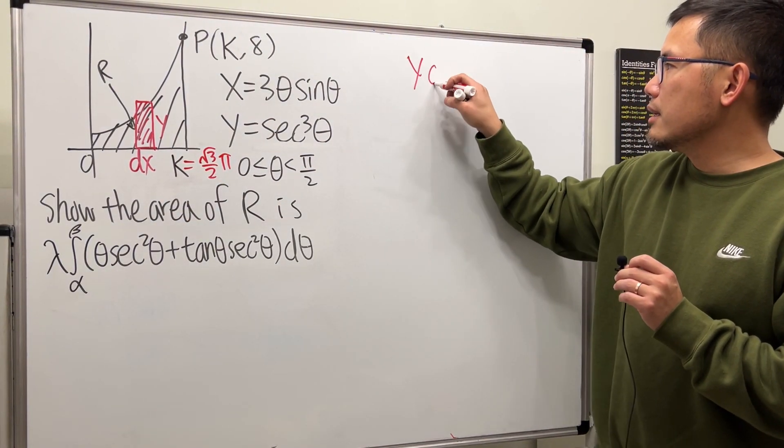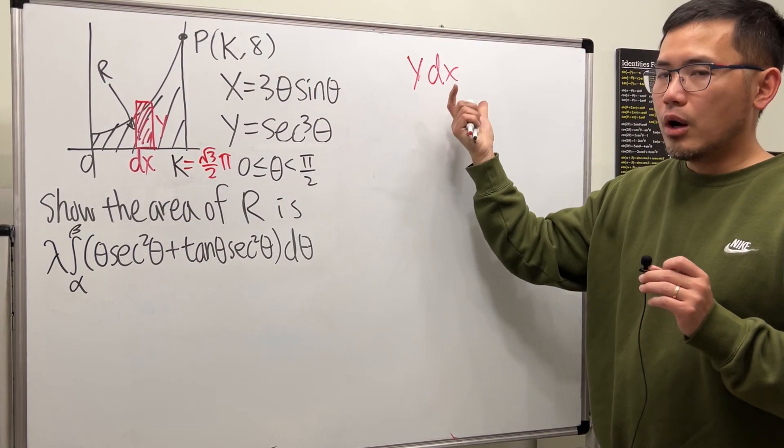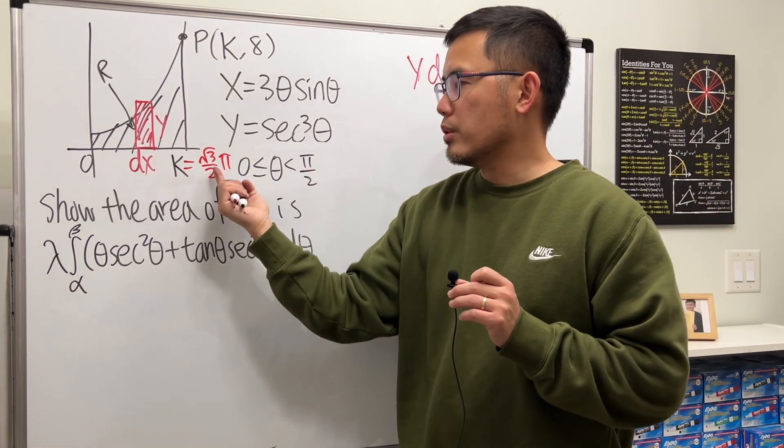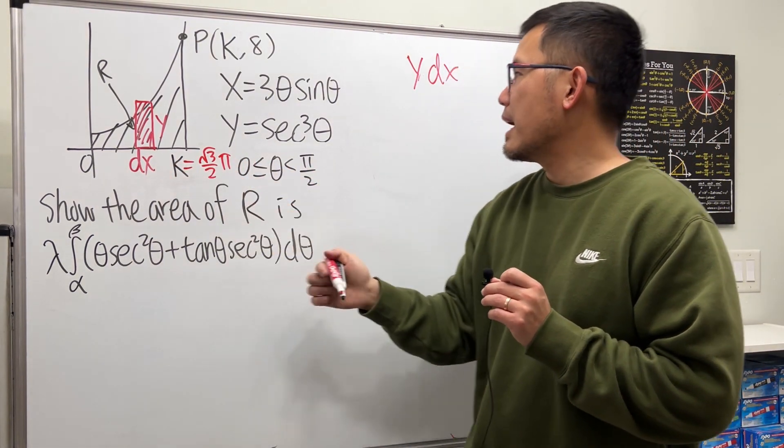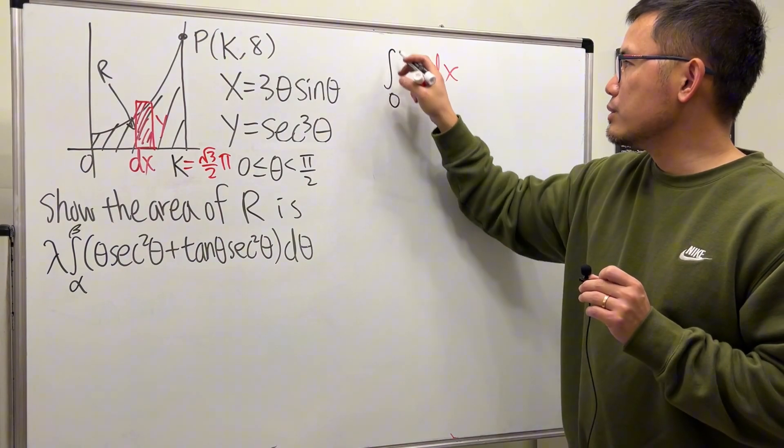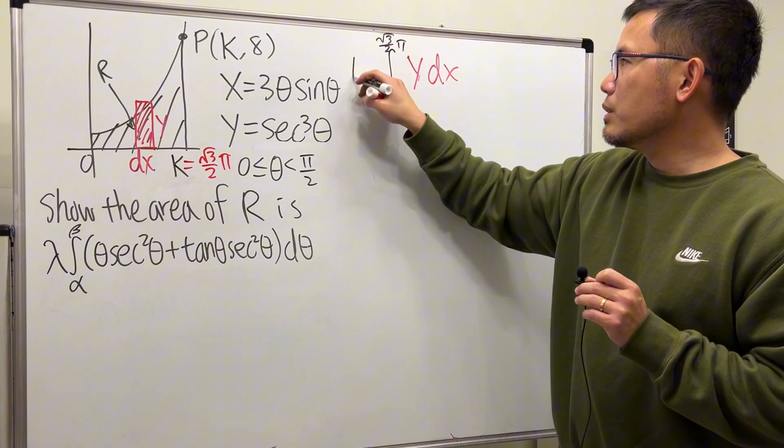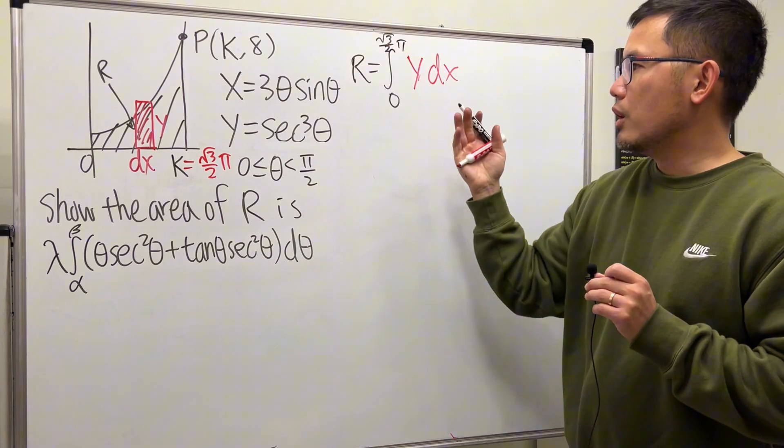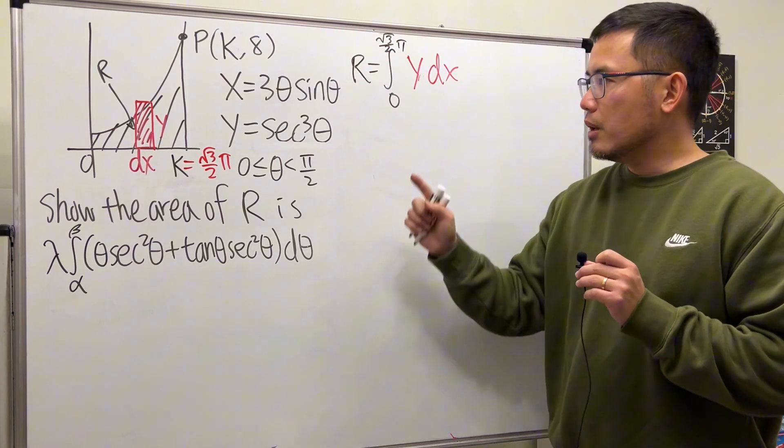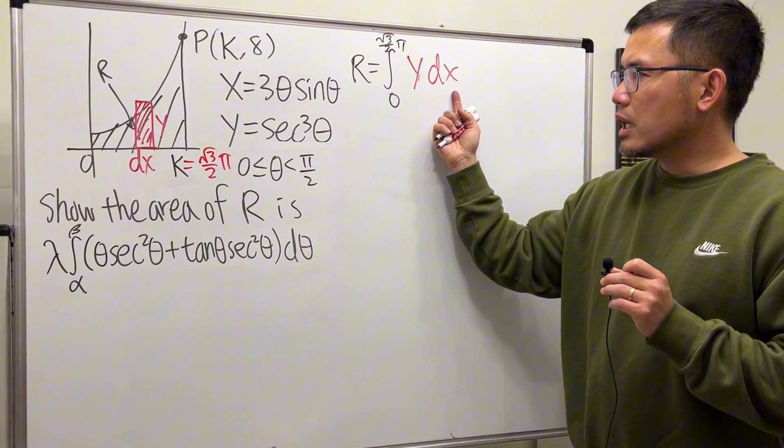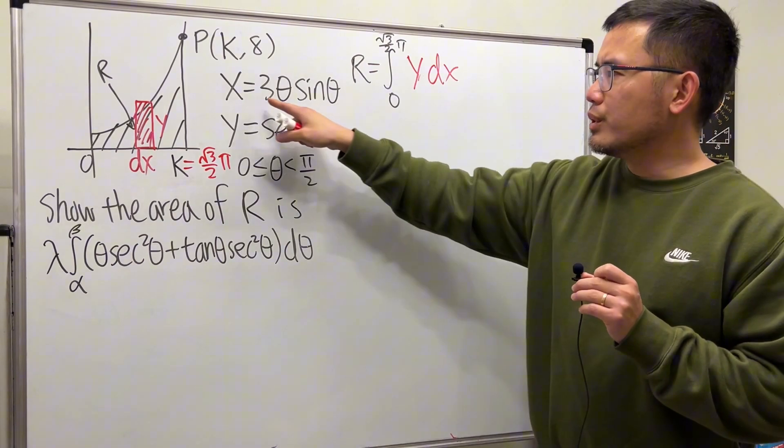We will add up all these rectangles from 0 to √3/2 times π by using an integral. So integrating from 0 to √3/2 times π, that will give us the area for the region R.